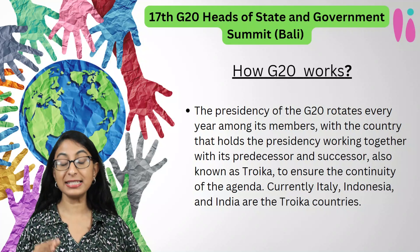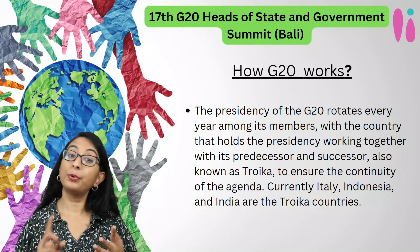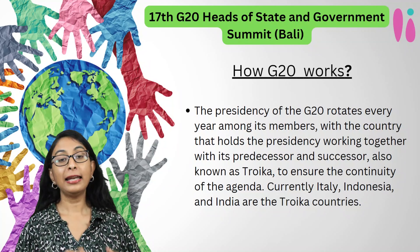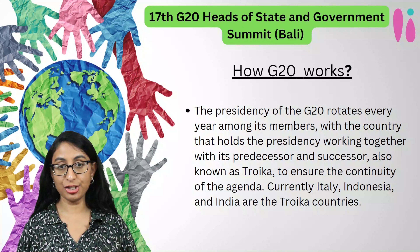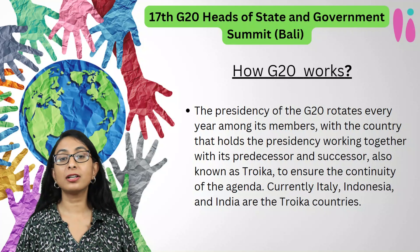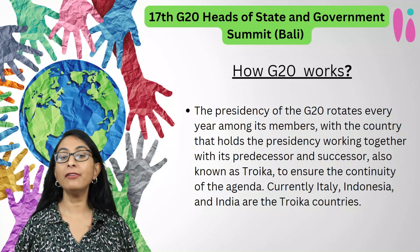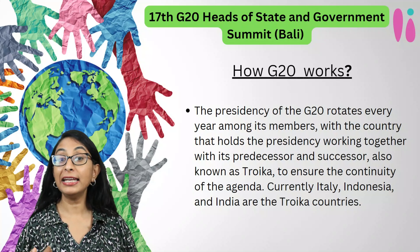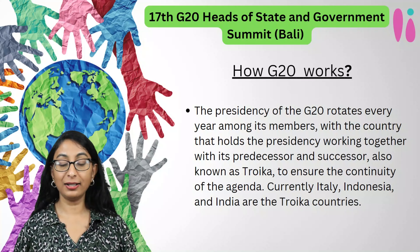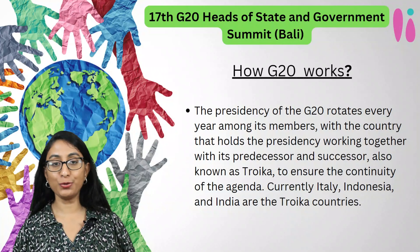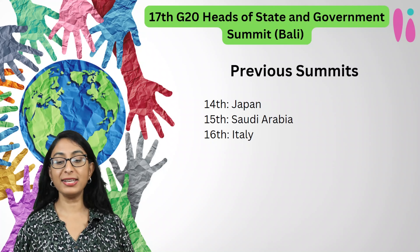The next G20 summit will be held in India. The three countries currently in the Troika are Italy, Indonesia, and India. The previous summit was held in Italy, and this year's 17th G20 summit is being held in Indonesia, in Bali. From December 1st, India will take over the G20 presidency, with Indonesia becoming our predecessor.